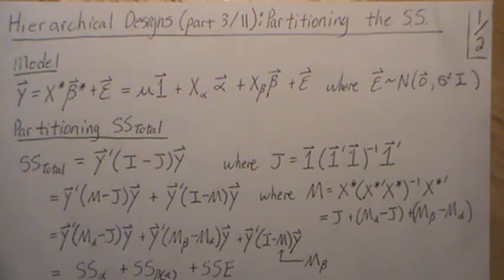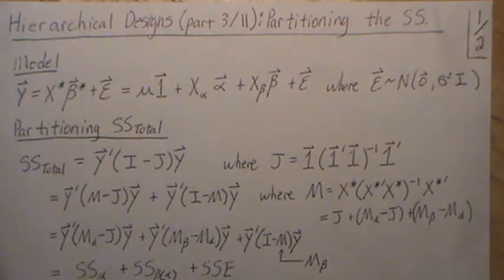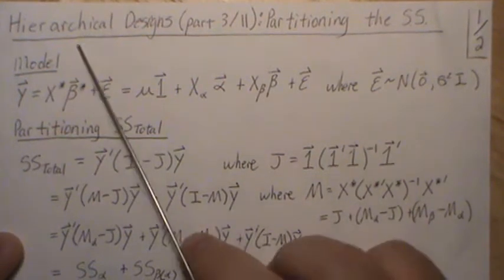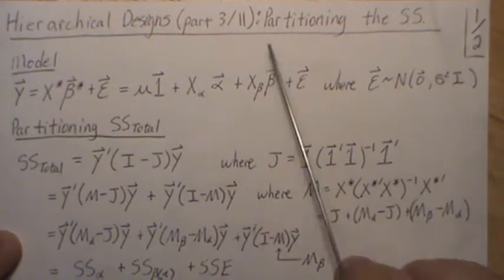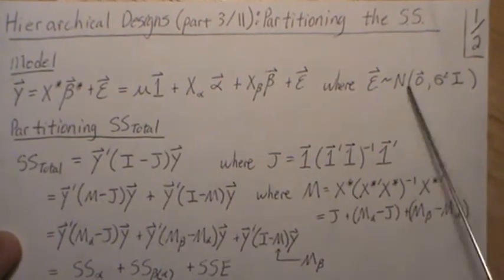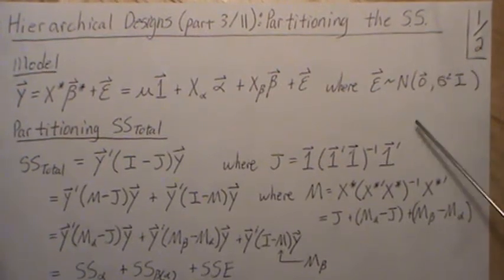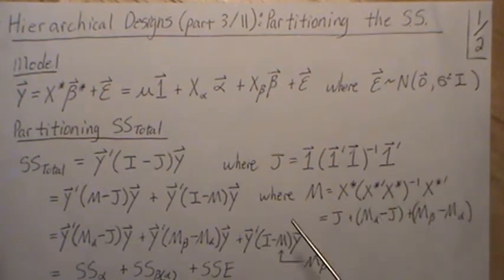Hello, this is the next video in a playlist that I'm calling General Linear Models, Design of Experiments, and we're in part three of an 11-part miniseries within that playlist. This miniseries deals with hierarchical designs, and we're partitioning the sum of squares — the total sum of squares for that model.